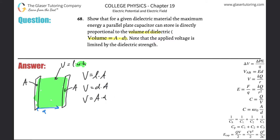Now let's get down to it. We need to use two formulas. First, the voltage between the two plates V_ab equals the electric field strength multiplied by the distance between them. Second, the capacitance equals the electrostatic constant k multiplied by the permittivity of free space ε₀ multiplied by the area of the two plates divided by d.